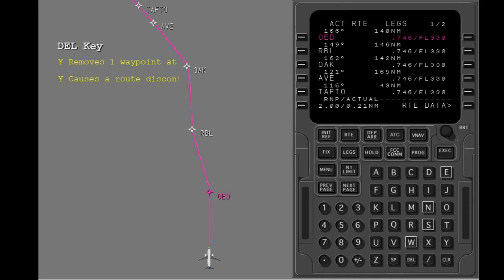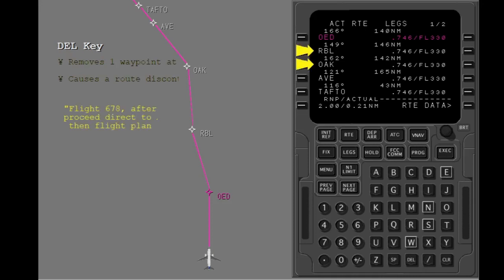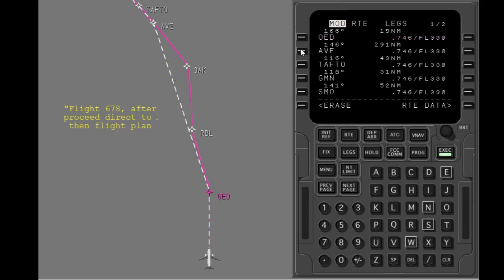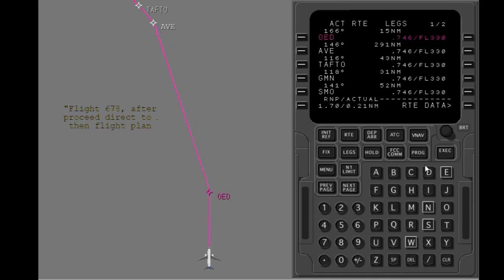The delete key removes only one waypoint at a time and causes a route discontinuity. If more than one waypoint must be removed, there is an easier procedure. To obey this clearance, you could delete Red Bluff and Oakland using the delete key. A better way is to bypass these waypoints by moving Avenal up in the waypoint sequence. Move Avenal up the list and put it after Rogue Valley. Notice that if you bypass a waypoint and do not use the delete key, you avoid a route discontinuity. Now execute the modification. Red Bluff and Oakland are bypassed and removed from the route. The waypoints below Avenal move up.